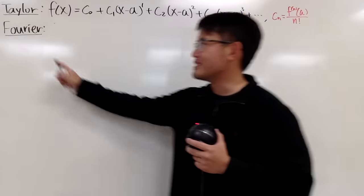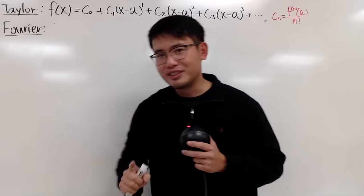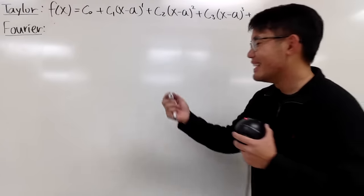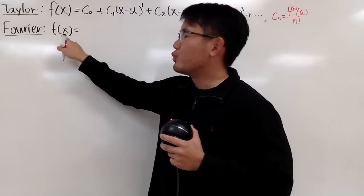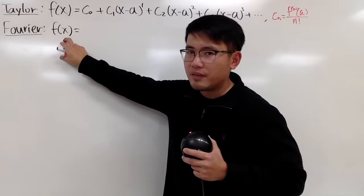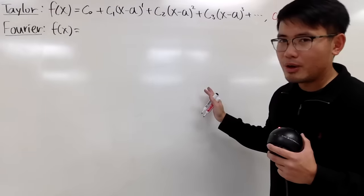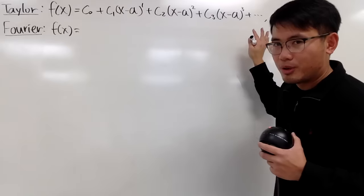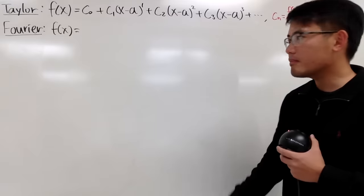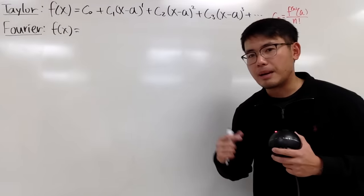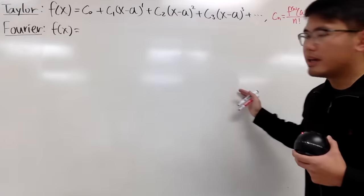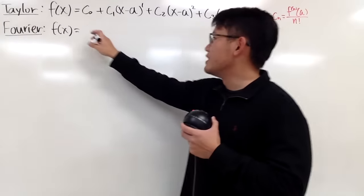Now let's talk about what the Fourier series is. First of all, 'Fourier' is just the name of a person, just like Taylor — nothing too fancy. The goal is similar: we want to write a function as something else, but this time we write f(x) as a trig series, not a polynomial. We'll be using sine and cosine to help us out, because they are periodic, and in a lot of situations things keep repeating, so it's a good idea to have sine and cosine as the building blocks.